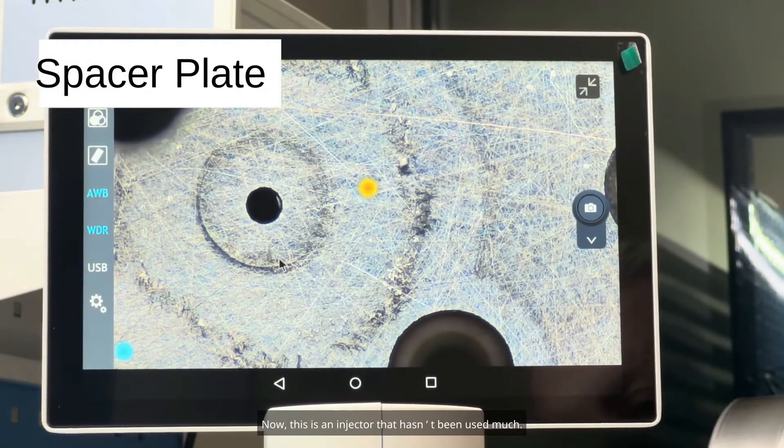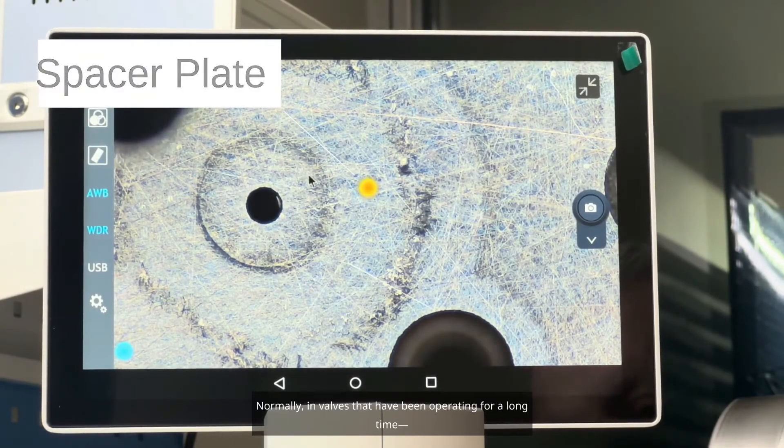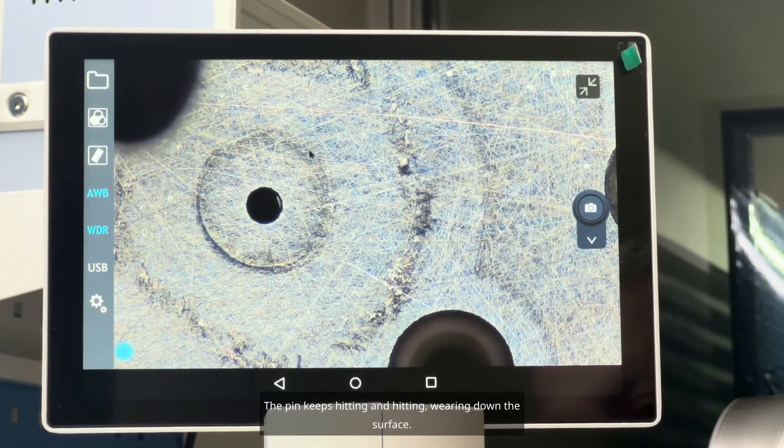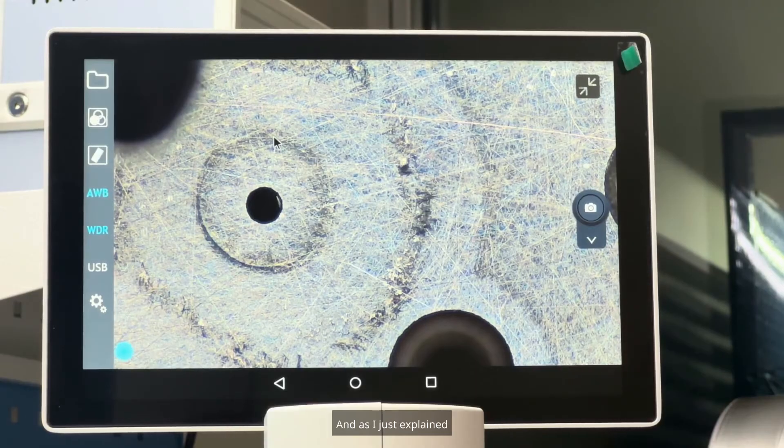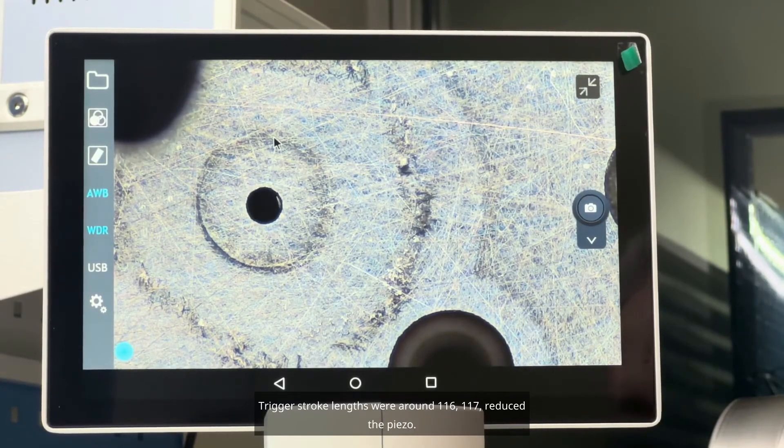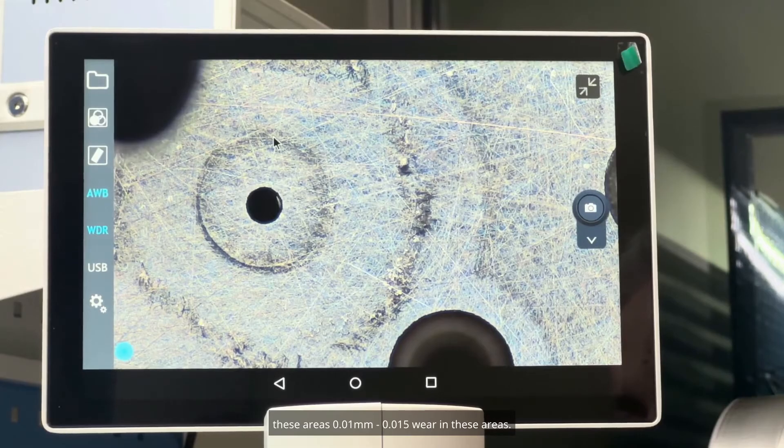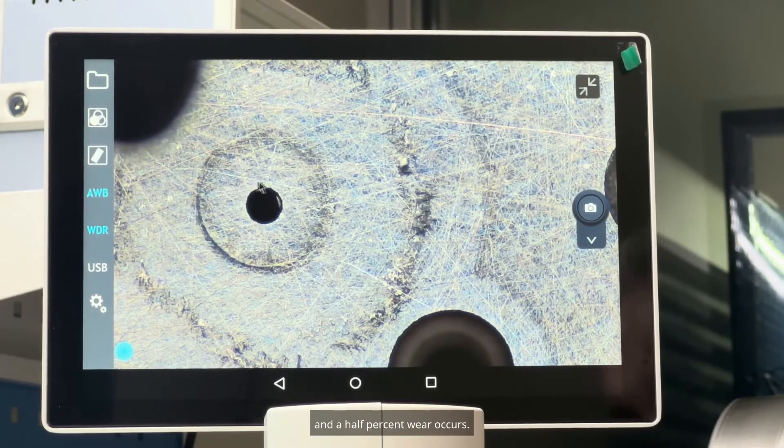Now, this is an injector that hasn't been used much. Normally in valves that have been operating for a long time, a dent forms here. The pin keeps hitting and hitting, wearing down the surface. And, as I just explained, trigger stroke lengths where around 116, 117 reduced the piezo trigger stroke 28 to 30 microns. These areas 0.01 mm, 0.015 wear in these areas.